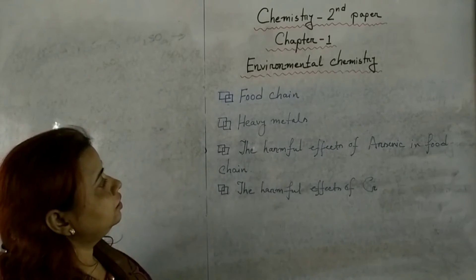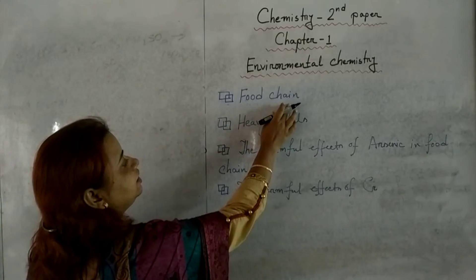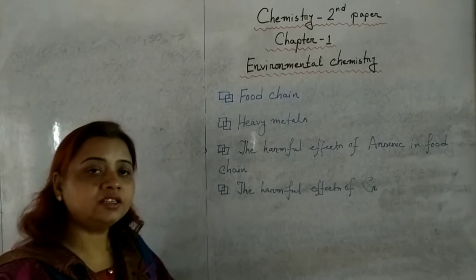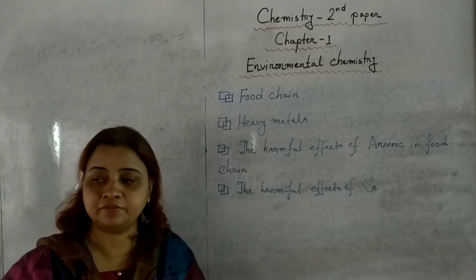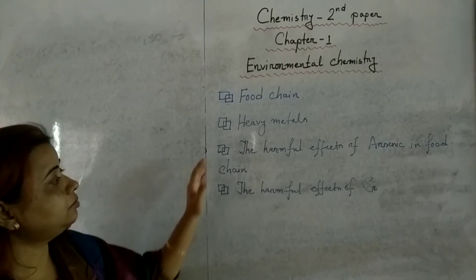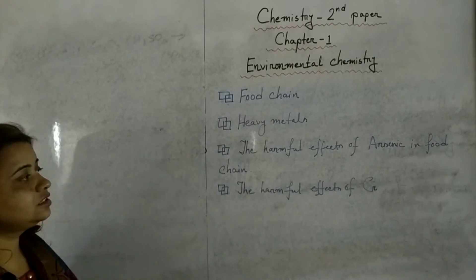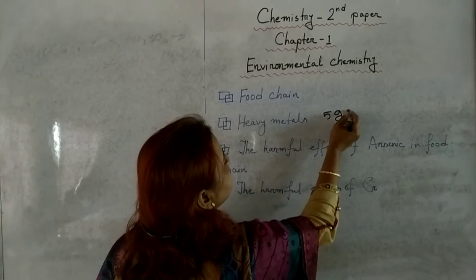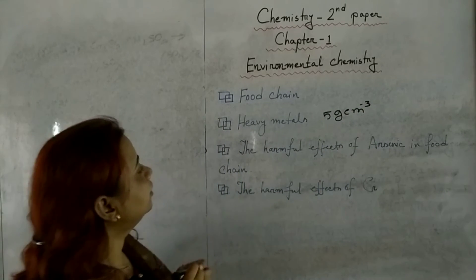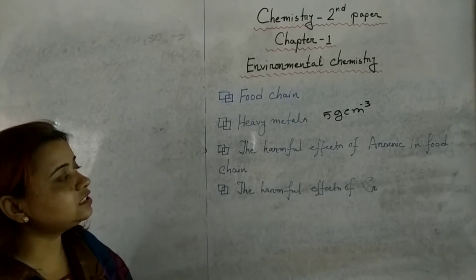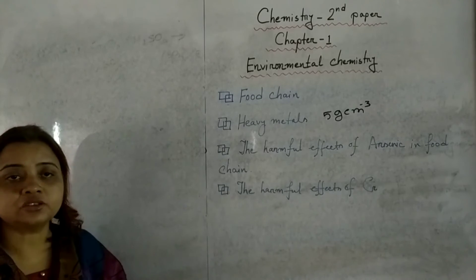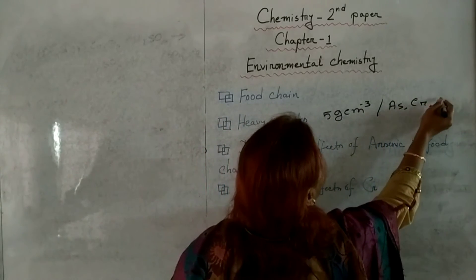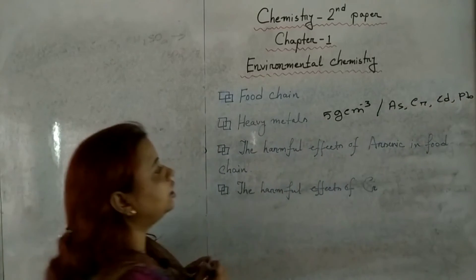Now come to food chain. If we consider food as a medium, the relationship which is built up between the source and the user of food is known as a food chain. Now come to heavy metals. Metals whose density is more than 5 grams per centimeter cube are known as heavy metals. Examples include arsenic, chromium, cadmium, and lead.